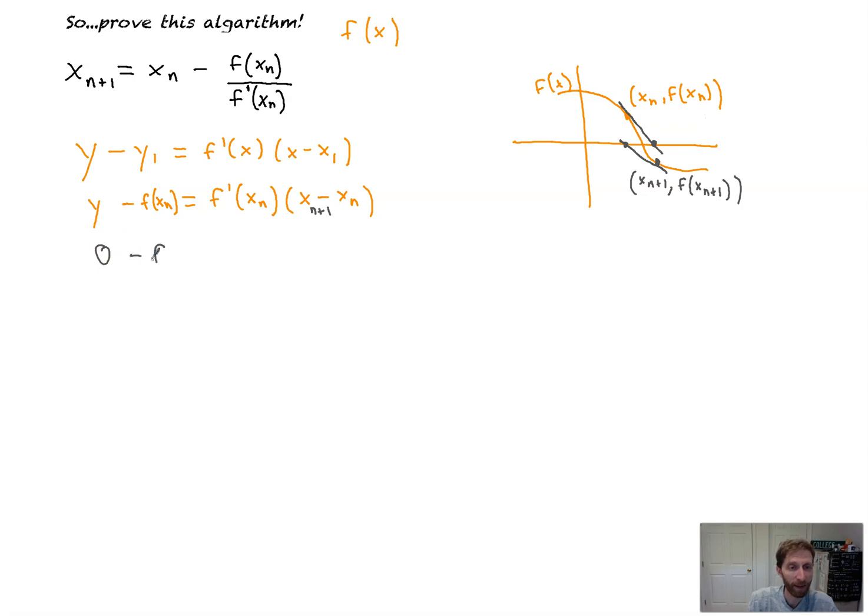So we're going to plug in 0 and watch the magic unfold. Remember, our goal is to solve for this. It's our approximation of what our 0 will be. We want to have that x value. So that's x sub n plus 1 minus x sub n. Now, I'm going to solve again for this. That's what I want to solve for.